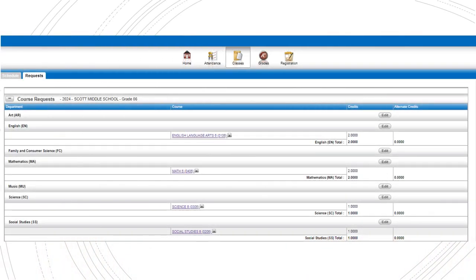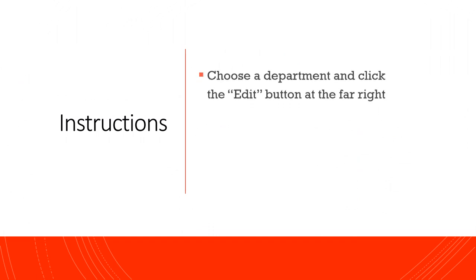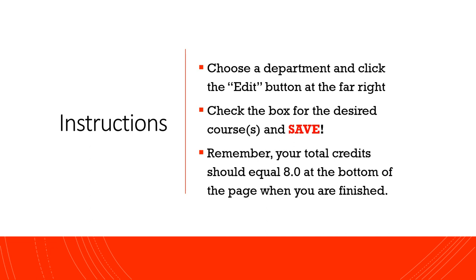Your request screen should look like this the first time you see it. You will need to select your other classes to complete your requests. Click on the edit button for each department, select the course or courses you would like to take, and make sure to save when you are done. Do not do anything with the drop-down box for alternate courses.